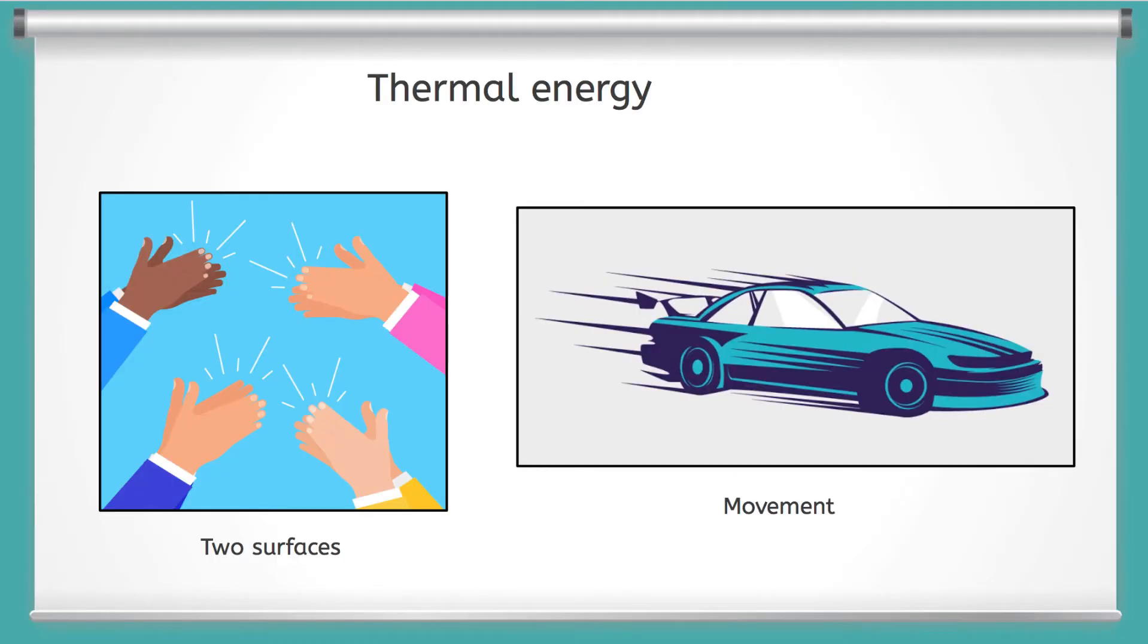And that distance comes from the movement of the two surfaces. So if we look at our energy checklist for thermal energy, we have the two surfaces, and then we have the movement. And so that's where the D or the distance comes from in our equation.